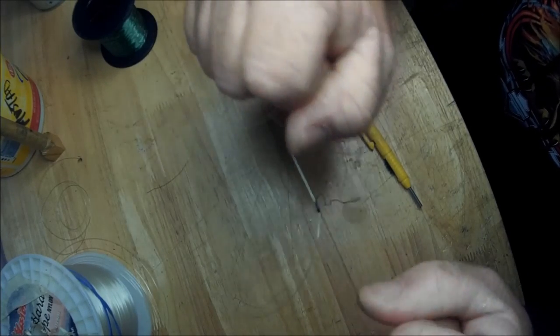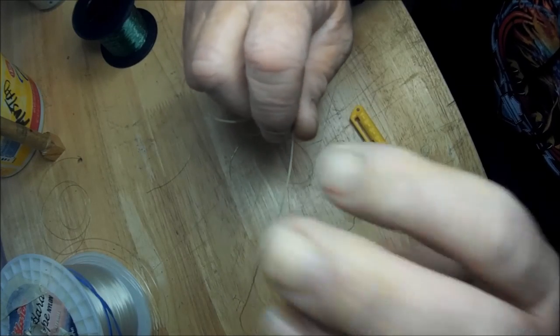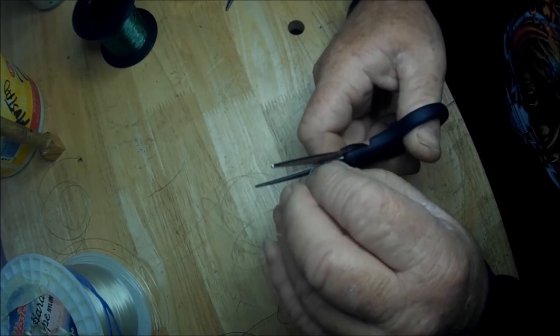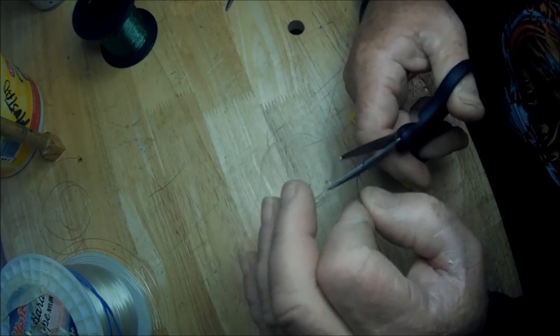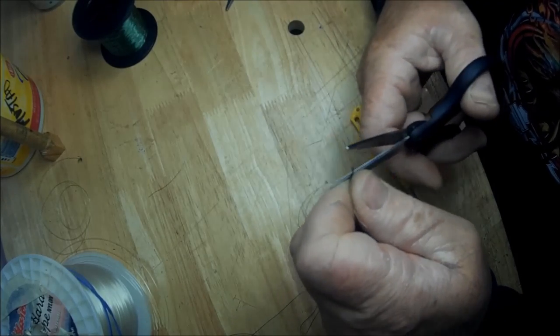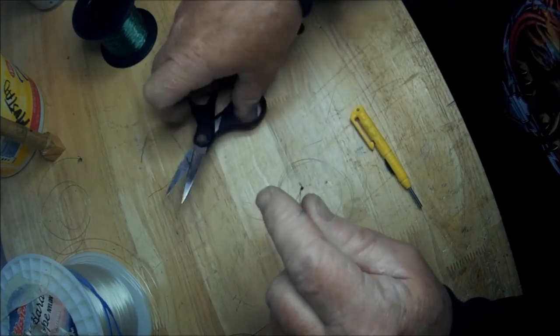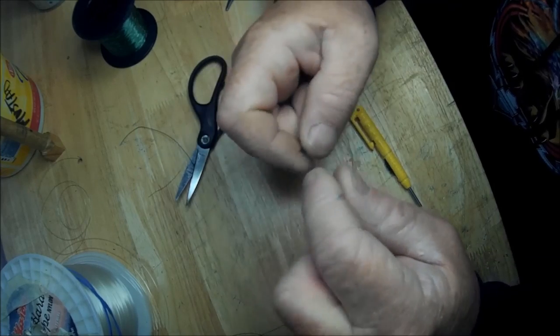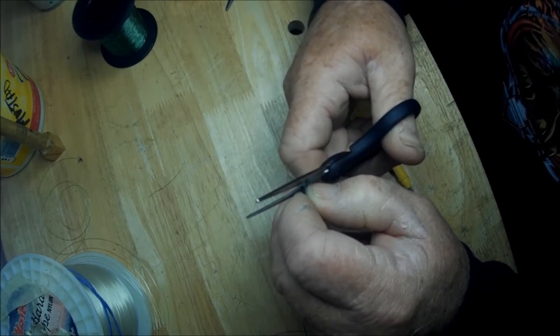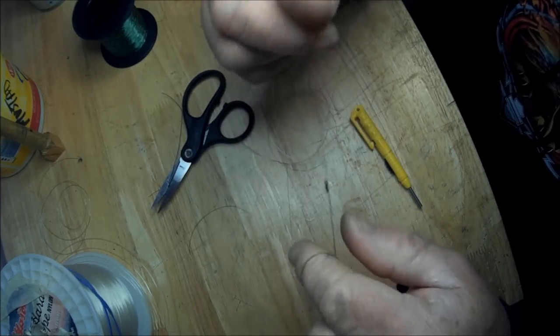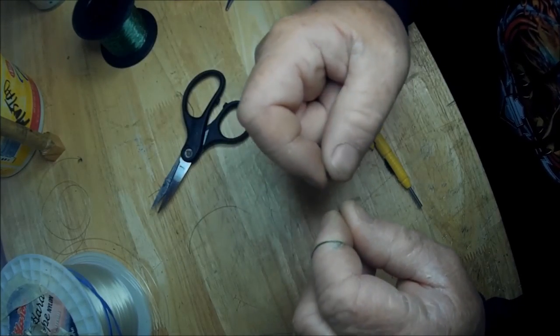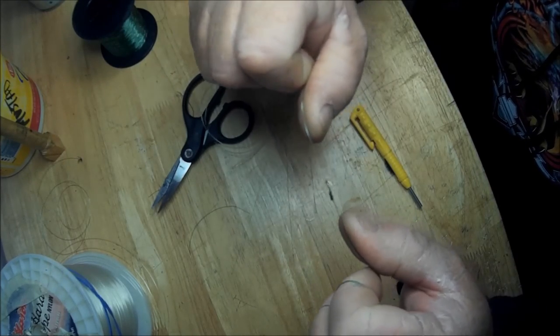So then same thing, you go in and you cut off your ends, cut off your tags here. You can do that relatively close. That one isn't all that close right there with the braid, but that's a little tiny knot now that has super strength that will go flying in and out of your guides and you won't even notice it's there.